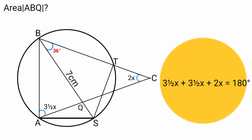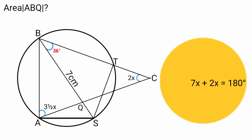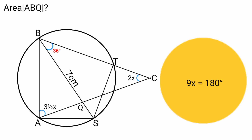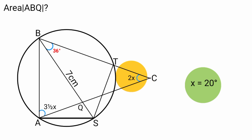Forming an equation: 3.5X plus 3.5X equals 7X, and 7X plus 2X equals 9X. So 9X equals 180 degrees. Dividing both sides by 9, X equals 20 degrees. Therefore 2X equals 40 degrees, and 3.5X equals 3.5 times 20 degrees, which is 70 degrees. Since both base angles are equal, the other base angle is also 70 degrees.